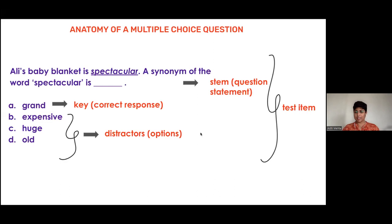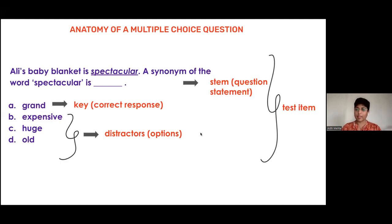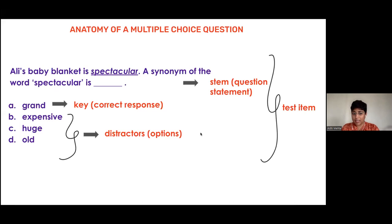The question statement is often divided into two parts. The first part is a context — 'Ali's baby blanket is spectacular' — that builds the base for the question, 'A synonym of the word spectacular is ___.' The whole question statement is called the stem. Then we have four options; the correct response is called the key, and the incorrect responses are called distractors.